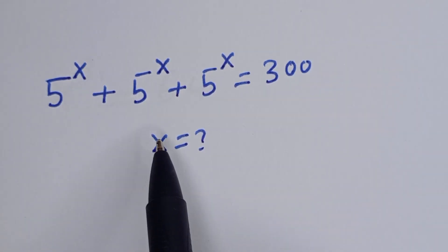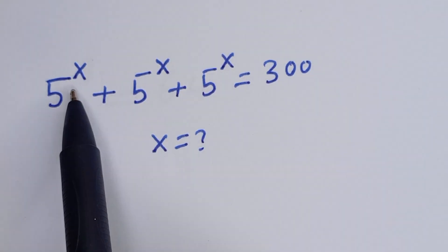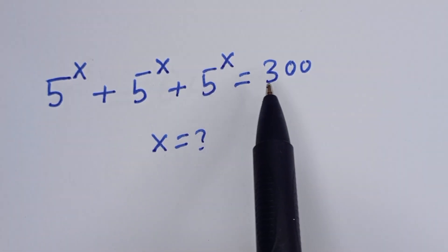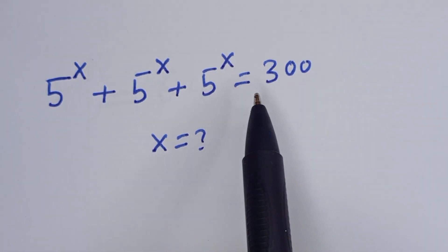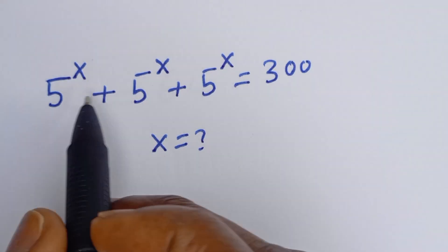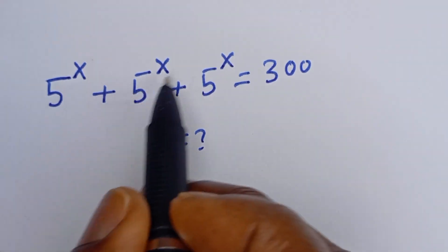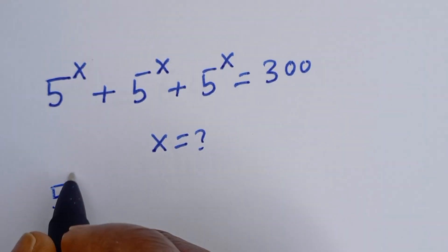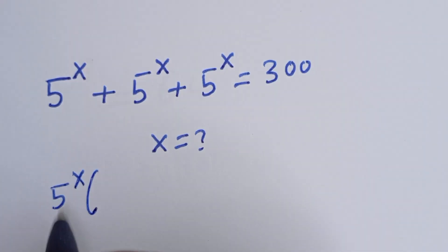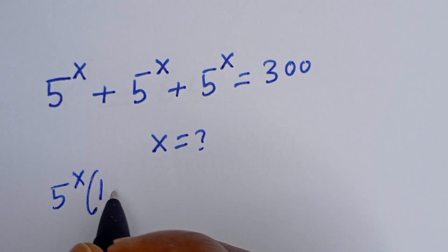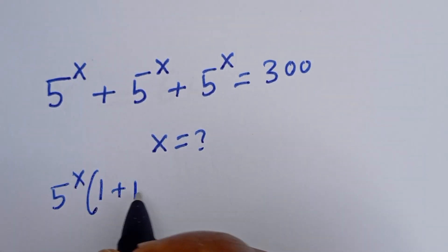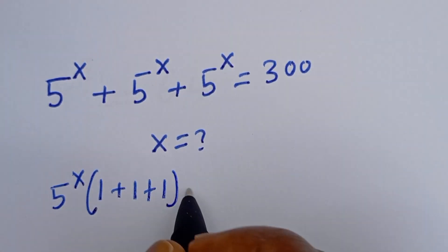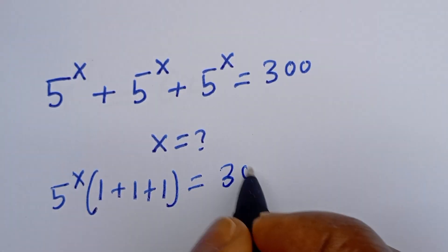How to solve for s in this equation: 5 to the power of s plus 5 to the power of s plus 5 to the power of s is equal to 300. Here we can see that 5 to the power of s is common — let's bring it out. 5 to the power of s, bracket: this divided by this, plus this divided by this, plus this divided by this, is equal to 300.